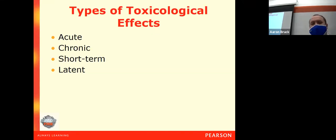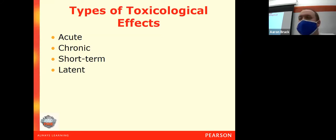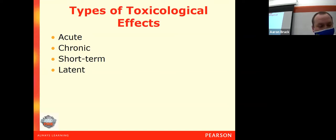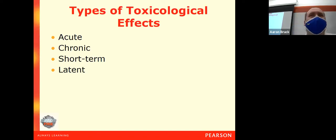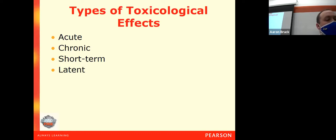When it comes to toxicological effects, there are four types—four terms we use to describe those effects. We can describe something as acute, chronic, short-term, or as a latent effect. Each of these four terms means something; they all refer to a specific amount of time—specifically, how long it takes for the effects of the toxin to be noticed and to start affecting the body systems.